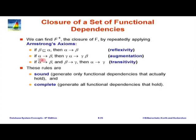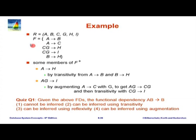Now let us try to apply this to a particular example. Take the schema R = {A, B, C, G, H, I} with the set of functional dependencies: A determines B, A determines C, CG determines H, CG determines I, B determines H. What all can you infer from this? There are many things one can infer. We are going to pick a few members of F-plus which we can infer using Armstrong's axioms.